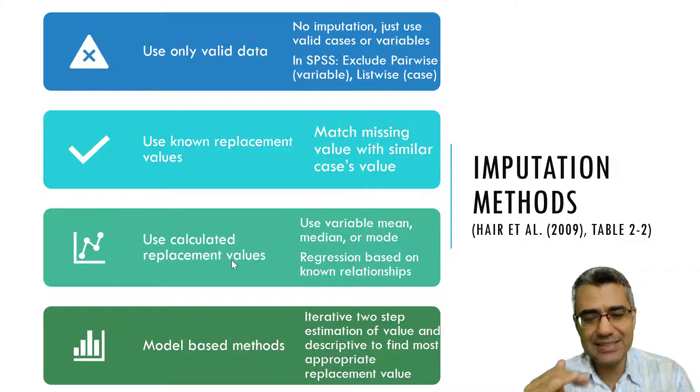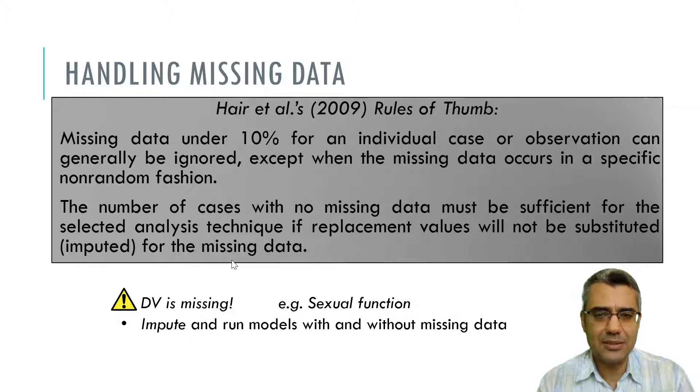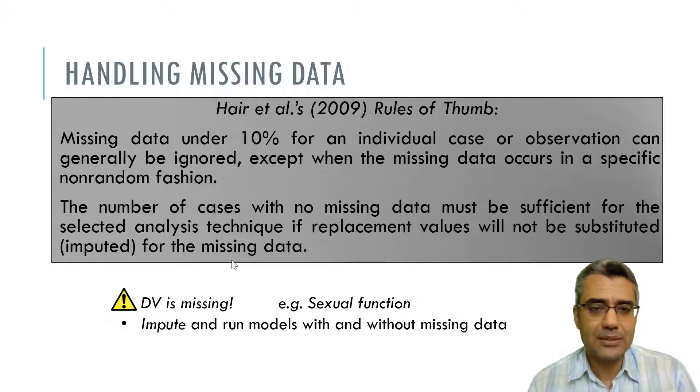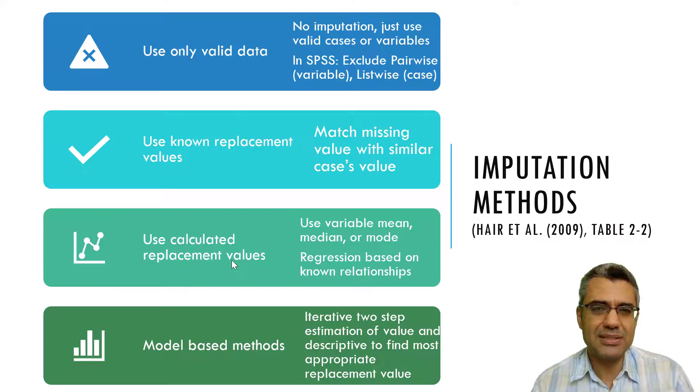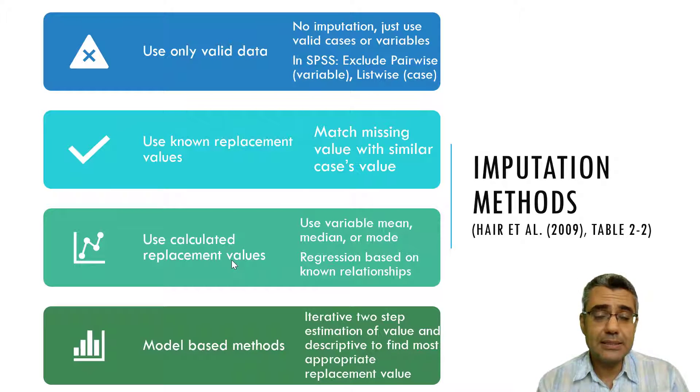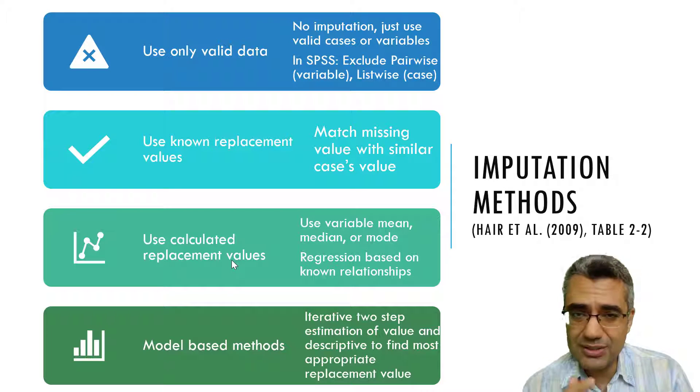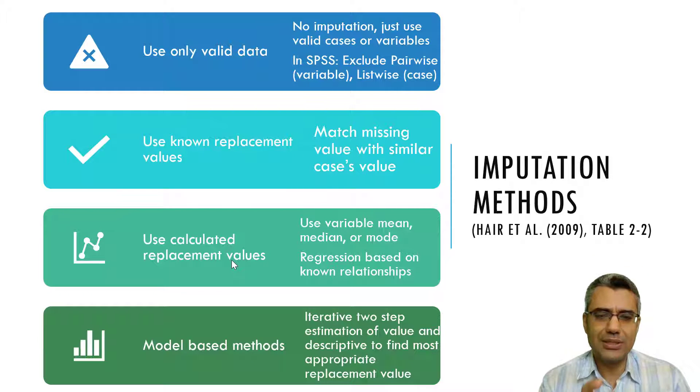This is the rule of thumb. So if my missing cases is below 10 percent and it's random, it's not systematic, I usually replace the missing case with mean.